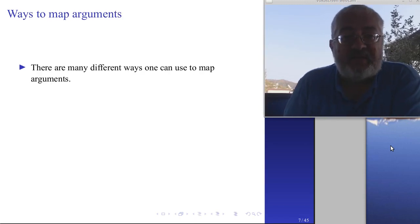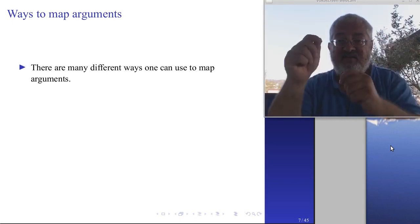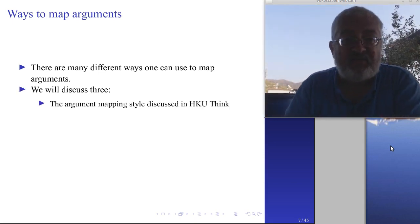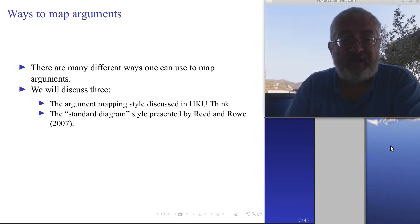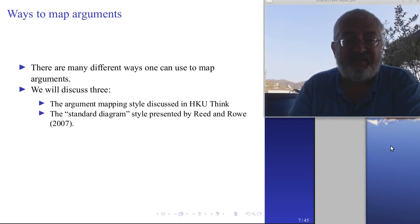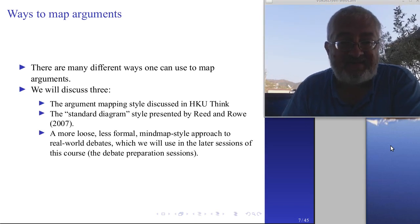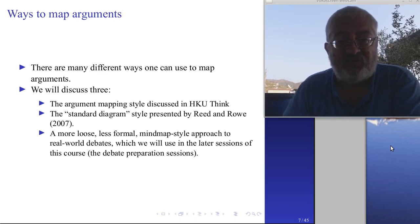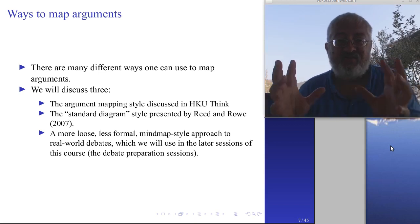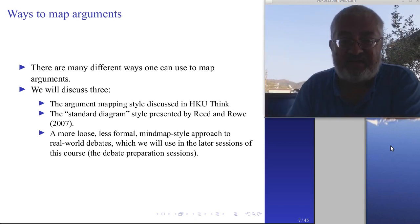There are many different ways one can use to map arguments. Writing things down and connecting boxes with arrows can be done in many ways. We will discuss three: one is the argument mapping style discussed in the HKU Think resource, which is the one we are supposed to use for this class; the standard diagram style presented by Reid and Rove; and a more loose, less formal mind map style approach to real-world debates, which is useful when you just want to collect a few arguments for a debate.